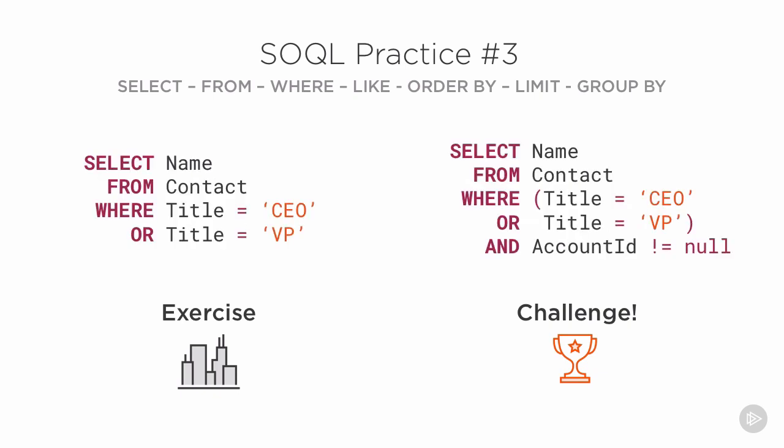Here are the answers to question three. For the exercise, we needed to use the OR keyword. Using the IN keyword would have been perfectly acceptable as well. The challenge was a little tougher because we needed to exclude contacts without an account. To properly include that filter, we need to surround our original filter with parentheses, then add the new filter using an AND clause. If you attempted to do this without any parentheses, your results likely aren't right.